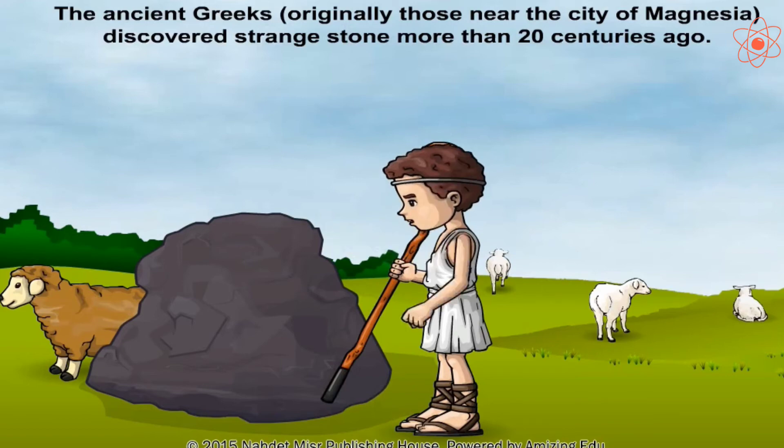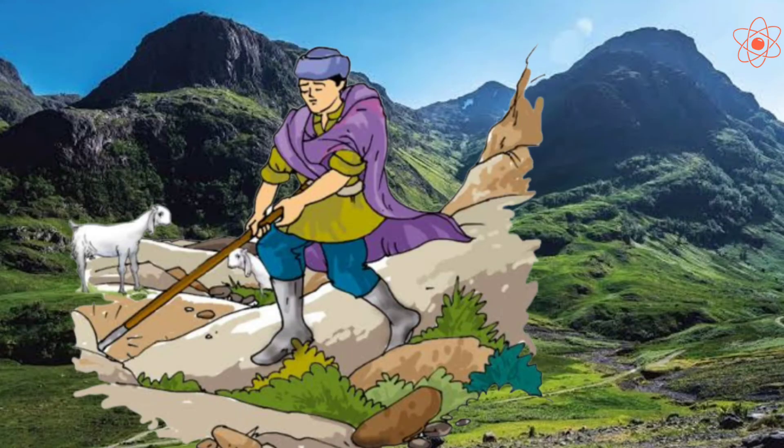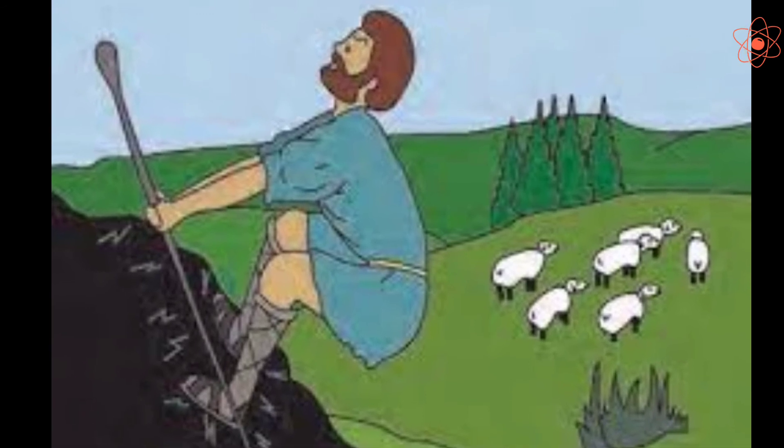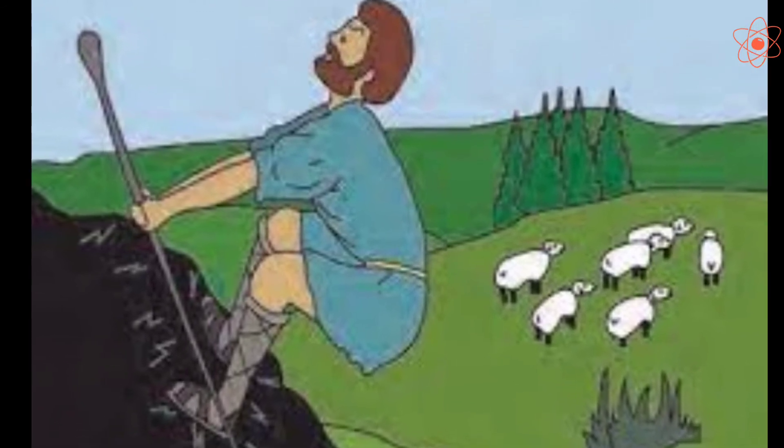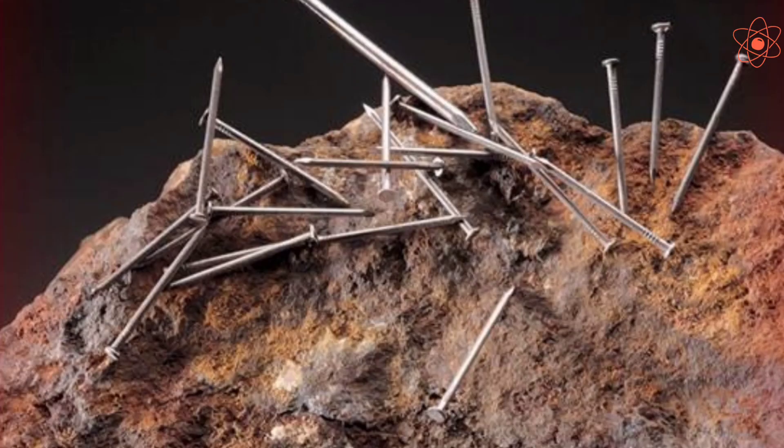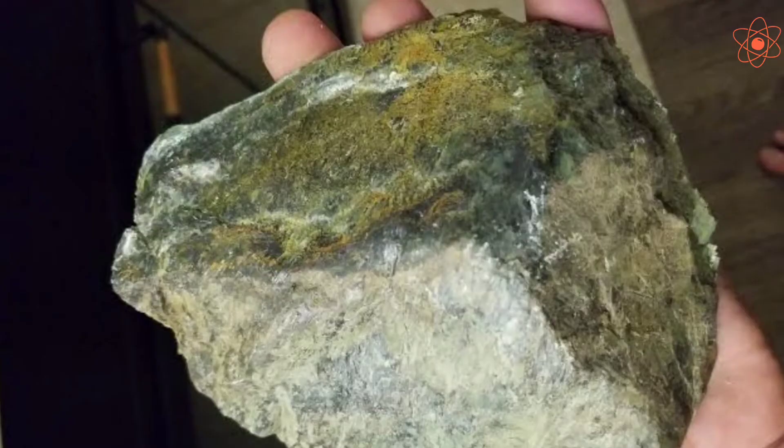He was surprised to find that the iron tip of his stick got stuck to the mountain rock. Magnus had to pull hard to free the iron end of his stick from the rock. He found that the rock was a natural magnet which attracted the iron tip of the stick.